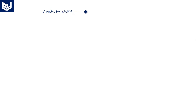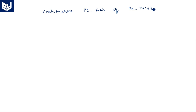Now coming to architecture. Architecture priority_encoder_behavioral of priority_encoder_74148 is — let us begin.